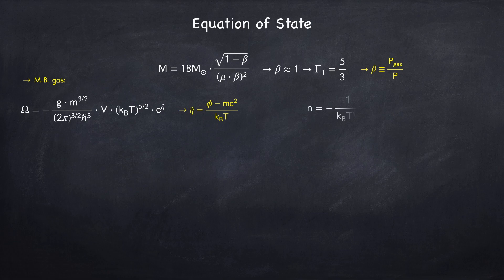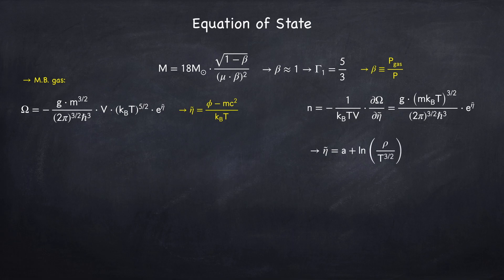From this we can find the particle number density. The particle number density will be proportional to the mass density, and I can invert this equation to solve for eta tilde. So eta tilde will be some constant, which I've called a, plus the log of the density divided by the temperature to the three halves.